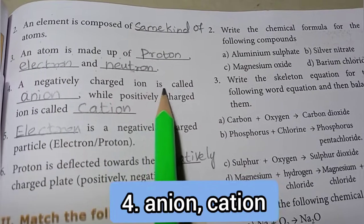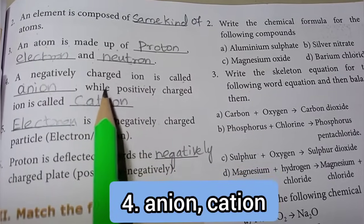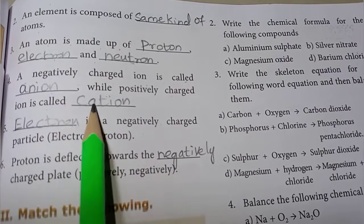A negatively charged ion is called anion, while positively charged ion is called cation.